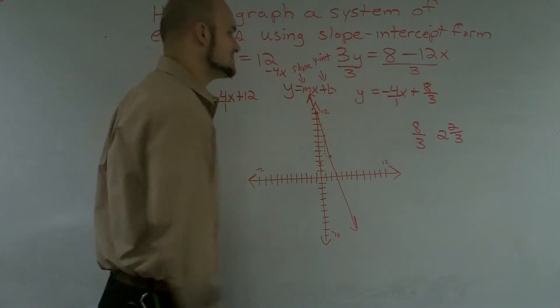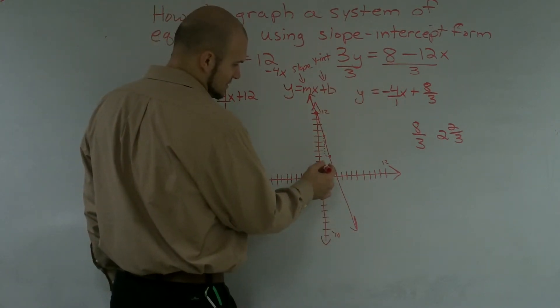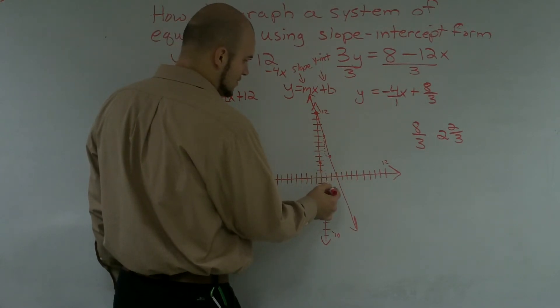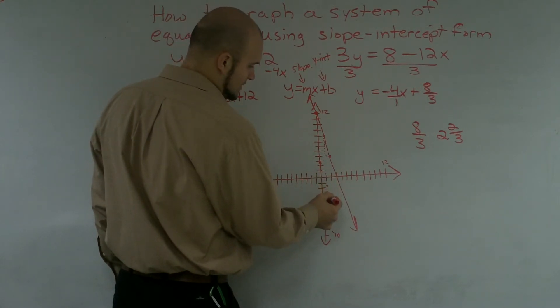Then again, I've got to follow my same slope. So I'm going to go down 4. So it would give me 1, 2, 3, 4, over 1. 1, 2, 3, 4, over 1.